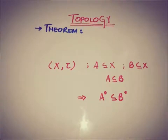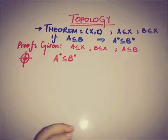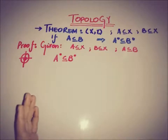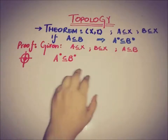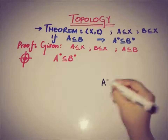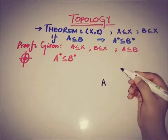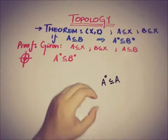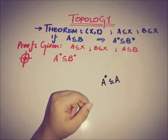We will prove this by using the definition of the interior. The interior of A is the union of all open subsets of A, which implies that the interior of A is the largest open subset of A, as it contains all of the open neighborhoods. So the interior of A is a subset of A.